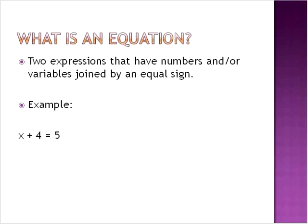An equation is two expressions that have numbers or variables, and they're joined by an equal sign. For example, we have the expression x plus 4 and the term 5, which would be an expression on its own, and they are joined by an equal sign. So x plus 4 equals 5.